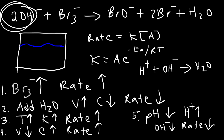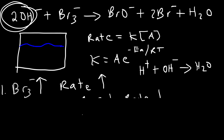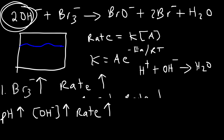However, the opposite is also true. If you increase the pH, that means the solution is becoming more basic, which means the concentration of hydroxide ions is going up. So if the concentration of the reactants goes up, then in this reaction the rate will increase. When dealing with pH changes, think about how it affects the H⁺ and OH⁻ concentrations. If they are part of the reaction, then that's going to affect the rate of the reaction.